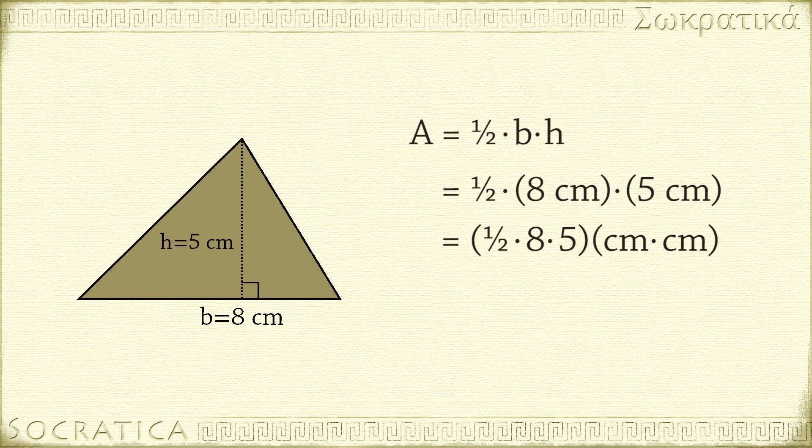First we multiply the numbers. One half times 8 times 5 is 20. Next we multiply the units. Centimeter times centimeter is equal to centimeters squared. You indicate this with the squared exponent.